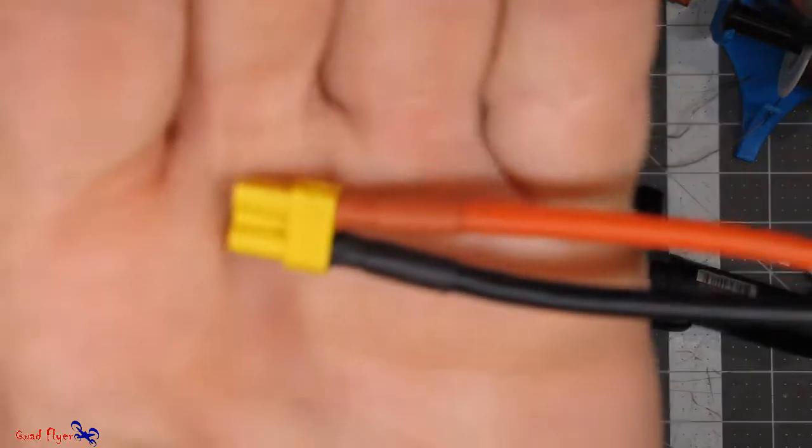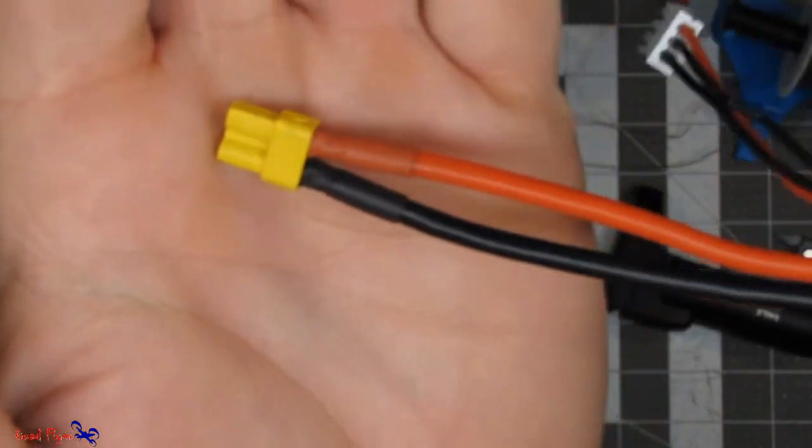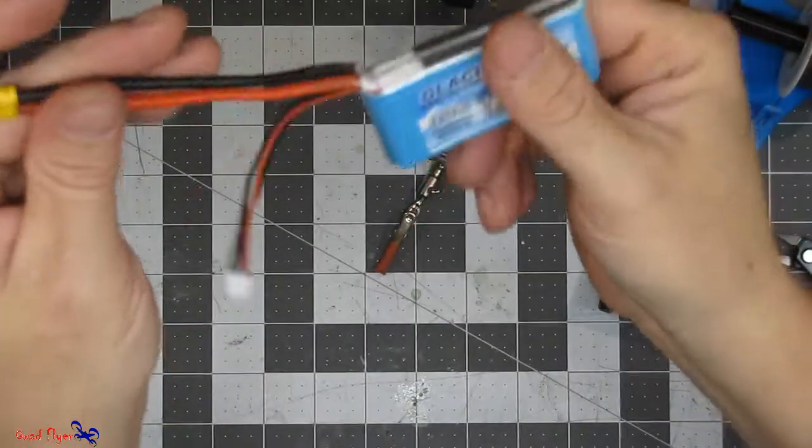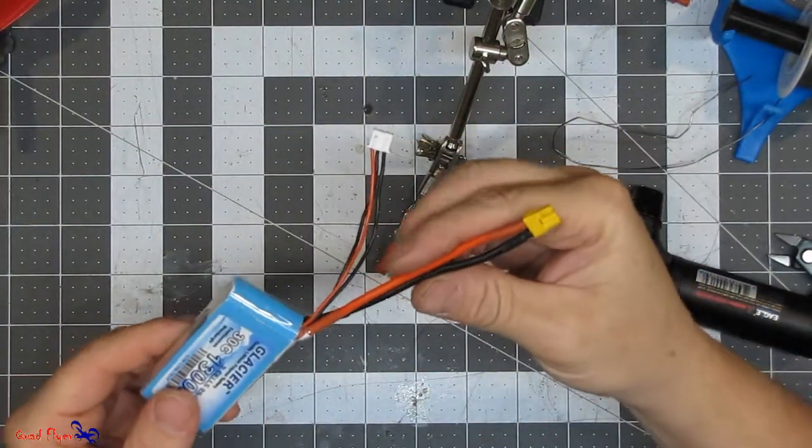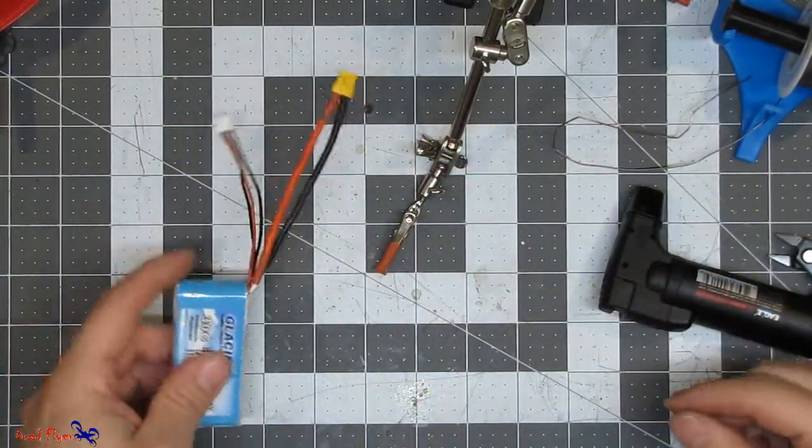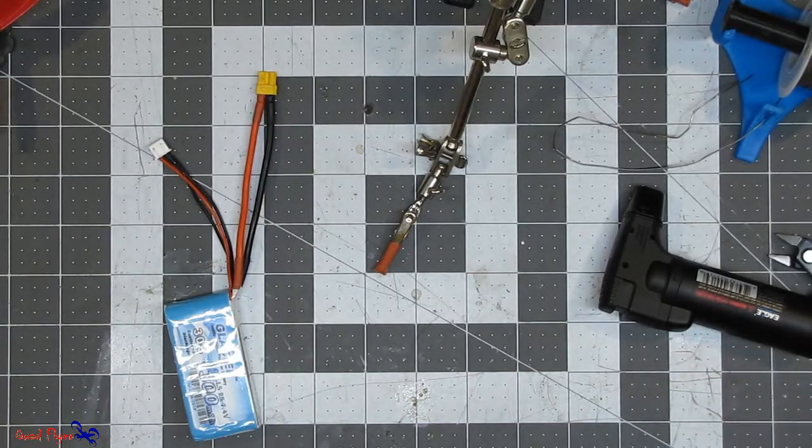And there we go. We are done. We've got our XT30 connector soldered onto the lead of my 2S LiPo. And that's how easy it is and the safest way I know how to do it. I hope you found this helpful and I'll see you in the next one.